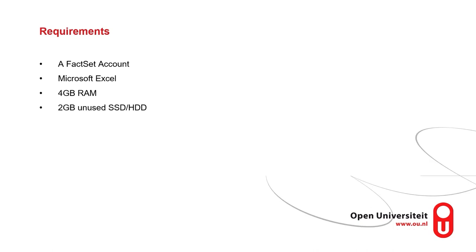To properly install FACSAT as well as the FACSAT plugins for Excel, PowerPoint, and Word on your computer, you need a FACSAT account, Microsoft Excel at least for the Excel plugin, a semi-decent computer with at least four gigabytes of RAM at a bare minimum, and two gigabytes of unused space. In its final version, the program is about 1.3 gigabytes.